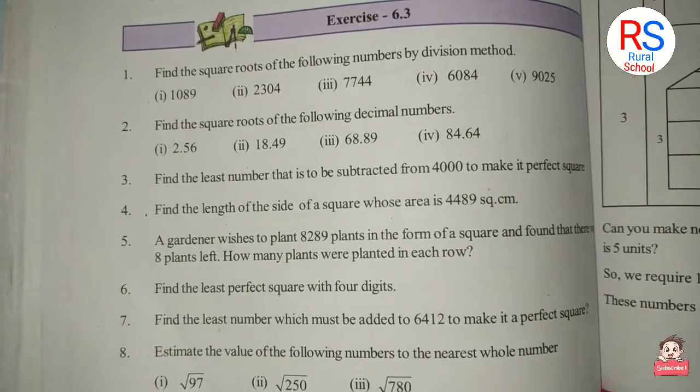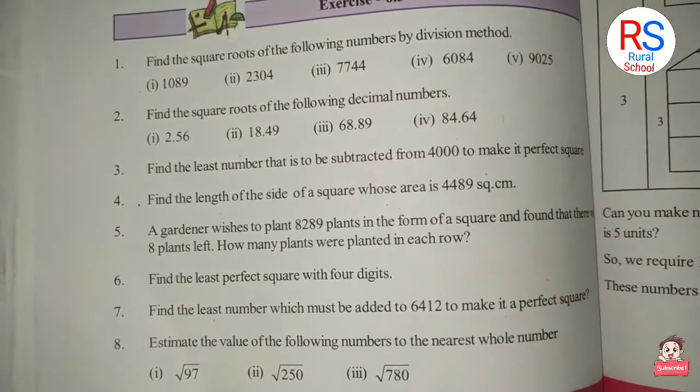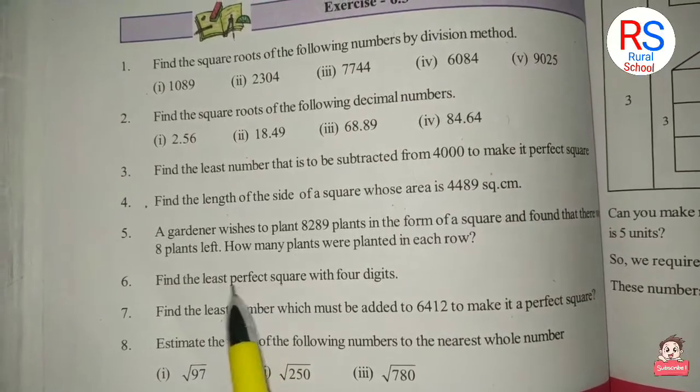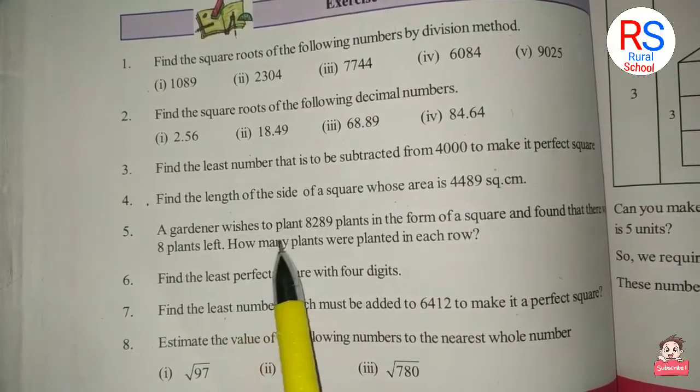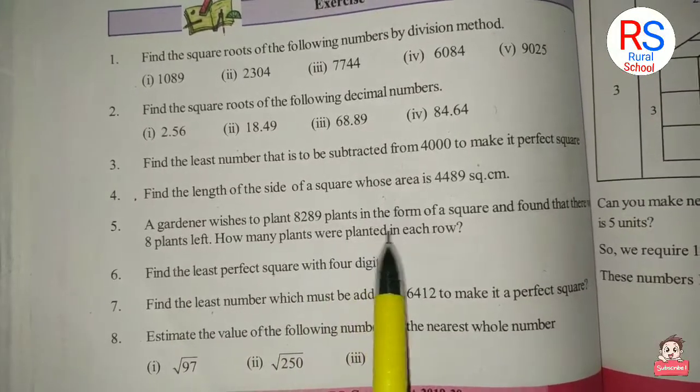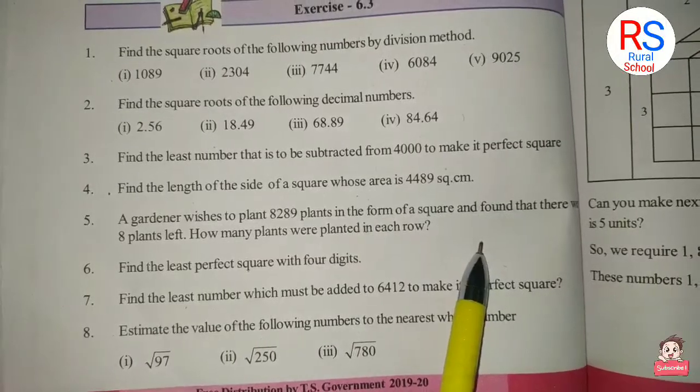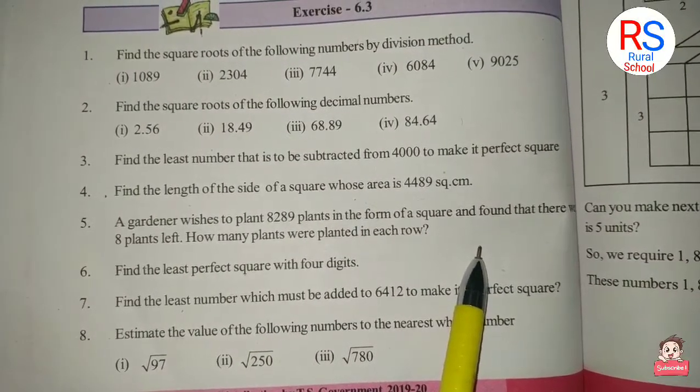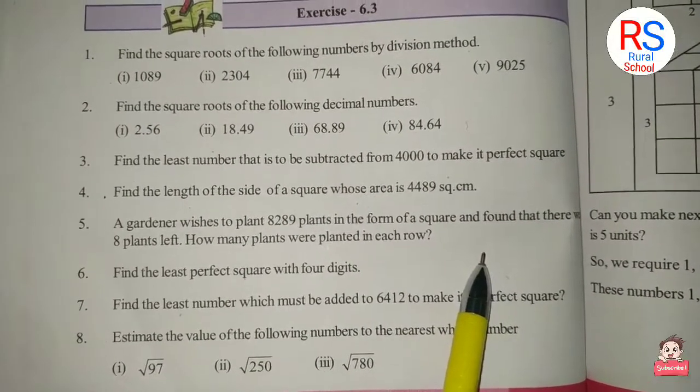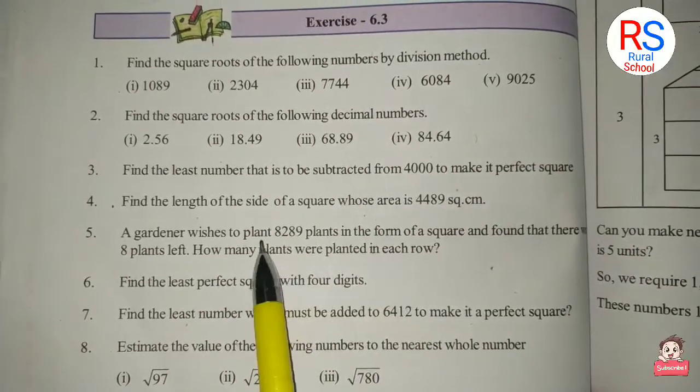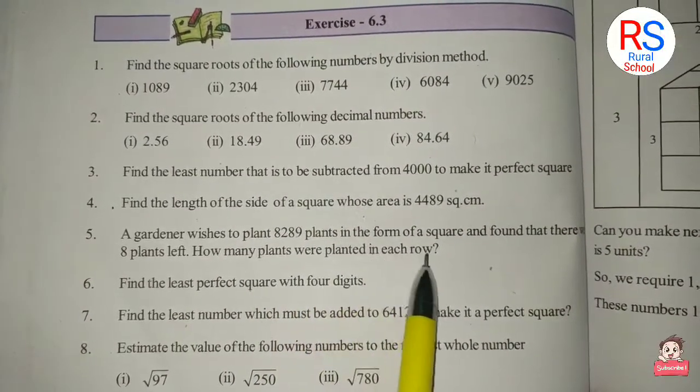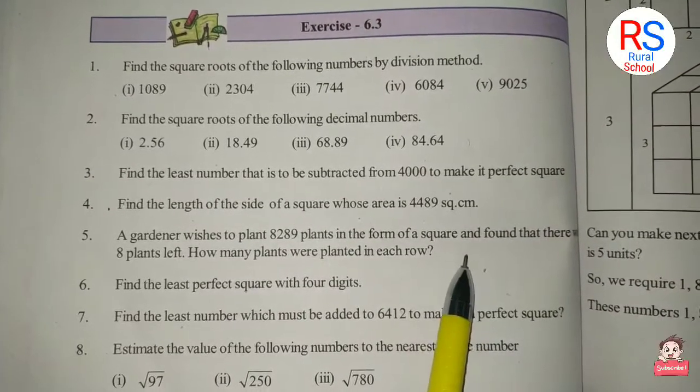The fifth problem is: A gardener wishes to plant 8,289 plants in the form of a square and found that there were 8 plants left. How many plants were planted in each row? The gardener has 8,289 plants in the form of a square shape.